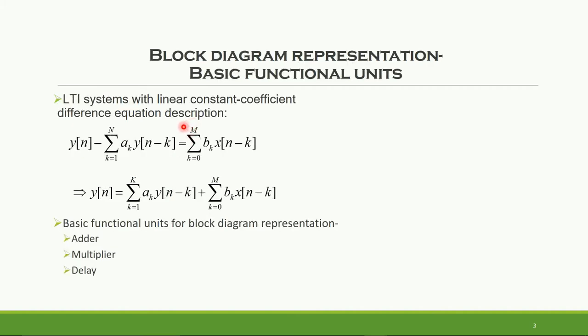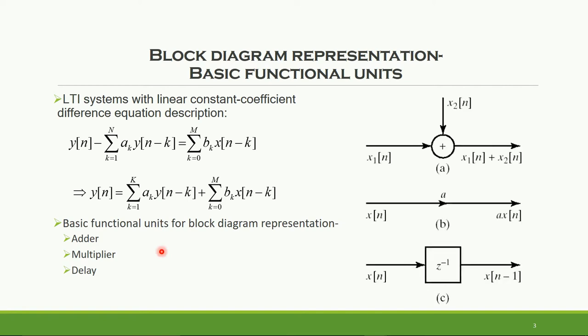An IIR filter structure or block diagram representation can be drawn using a constant coefficient difference equation form, or a transfer function form that is H of Z. The block diagram representation makes use of basic functional units such as an adder, multiplier, and delay unit.